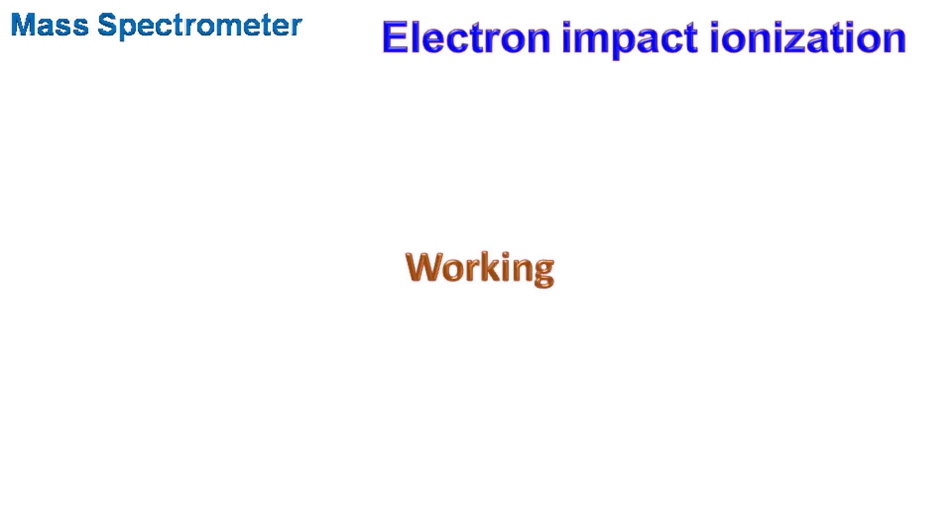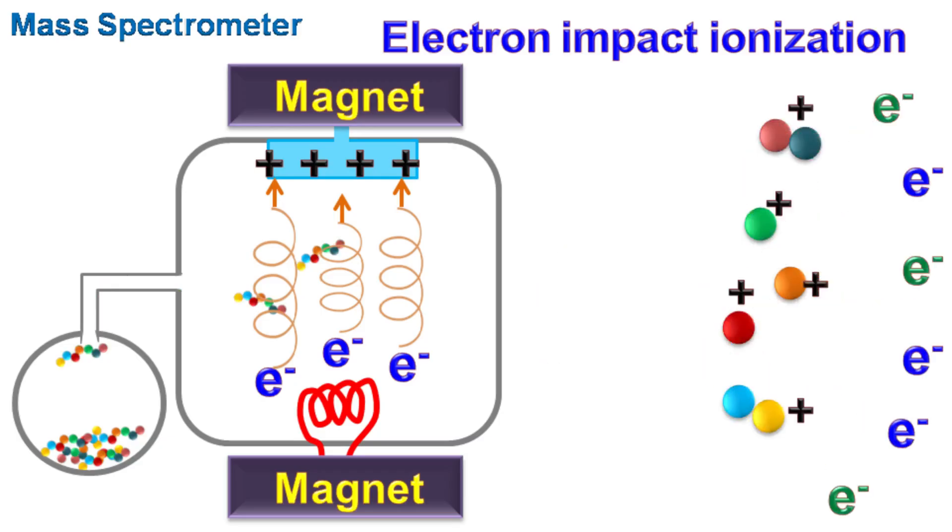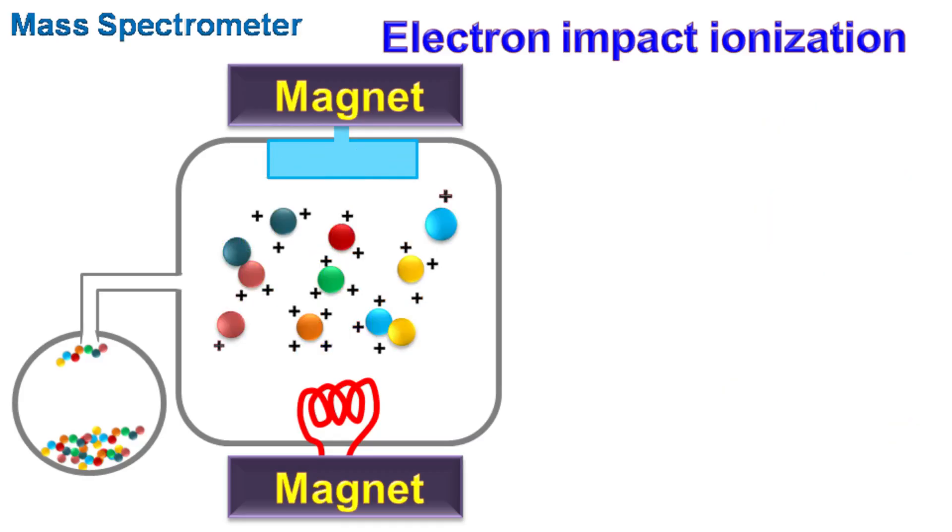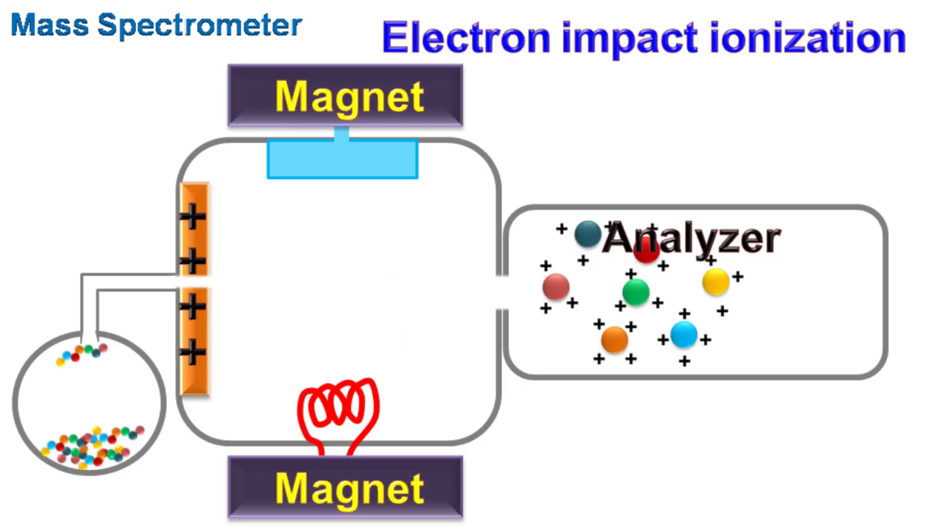Let's see the working of electron impact ionization. The sample is first vaporized and introduced in the ionization chamber through the sample inlet. The high energy electrons collide with the molecule and break it into small molecules, and as the electrons are released, the fragmented molecules will have a positive charge. To analyze these fragmented molecules, there is a repeller electrode which has a positive charge. The repeller electrode repels the positively charged molecular ions and accelerates them so that they can enter the analyzer.